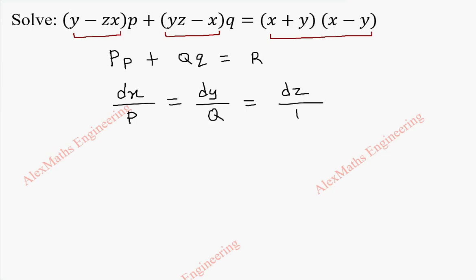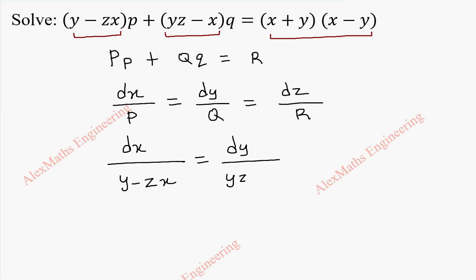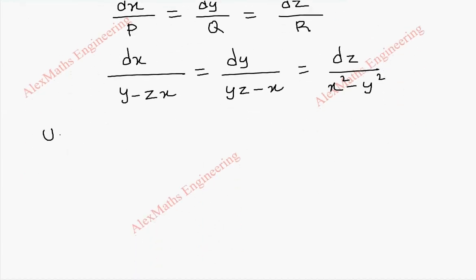So it is dx by substituting P, which is y minus zx, equal to dy by Q, which is yz minus x, and dz by R. Using the identity, x plus y into x minus y is x square minus y square. Now we have to use Lagrange's multiplier.